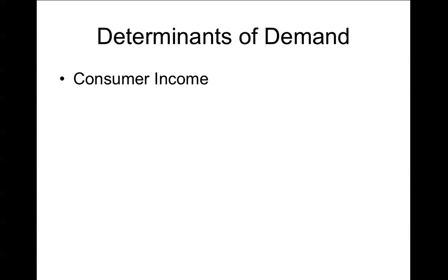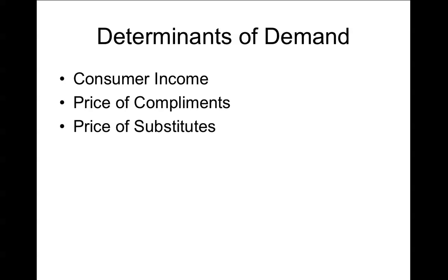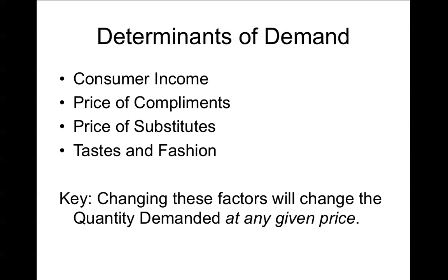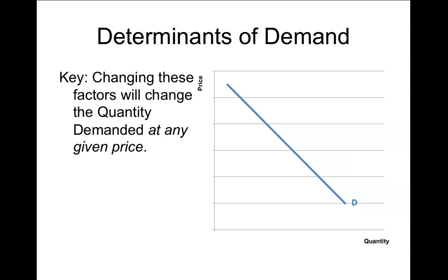We're going to look at the four determinants of demand in succession: consumer income, price of complements, price of substitutes, and taste and fashion. Changing any of these factors will change the quantity demanded at any given price. That's key — because changing any of these four factors leads to a horizontal shift in the demand curve. Changing them to mean more people want the product shifts the demand curve right; changing them to mean fewer people want it shifts the demand curve left.